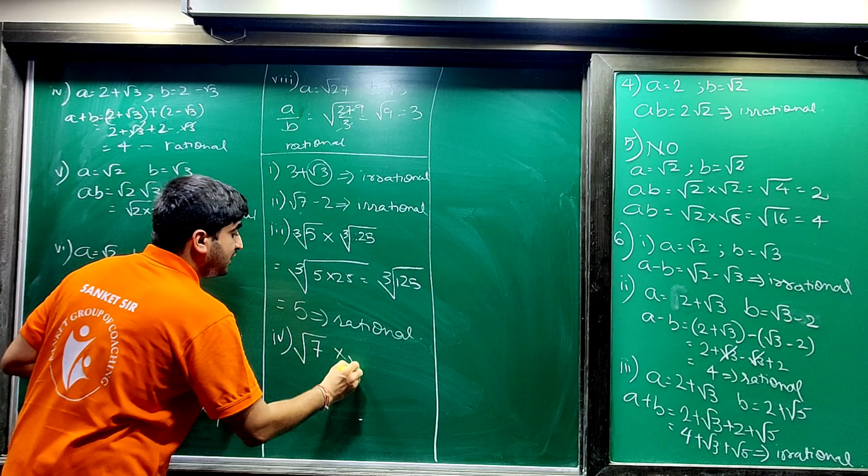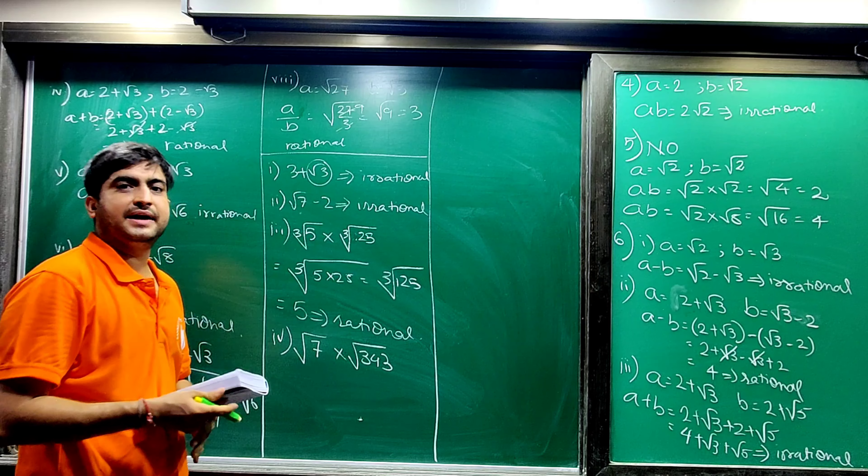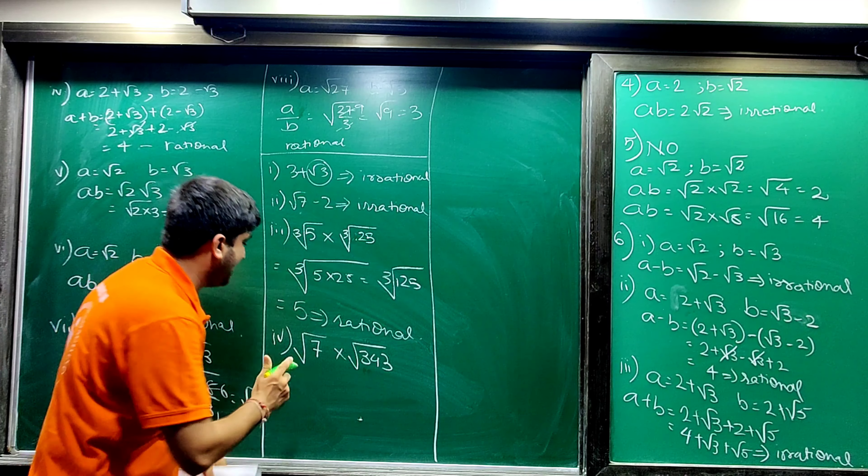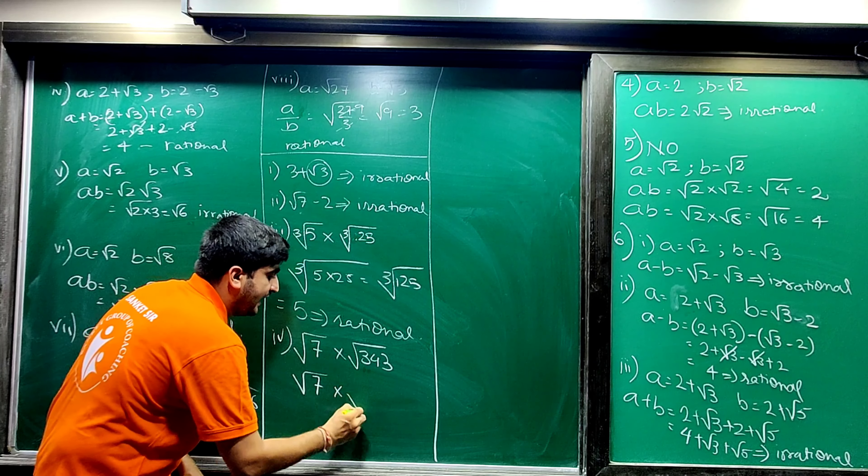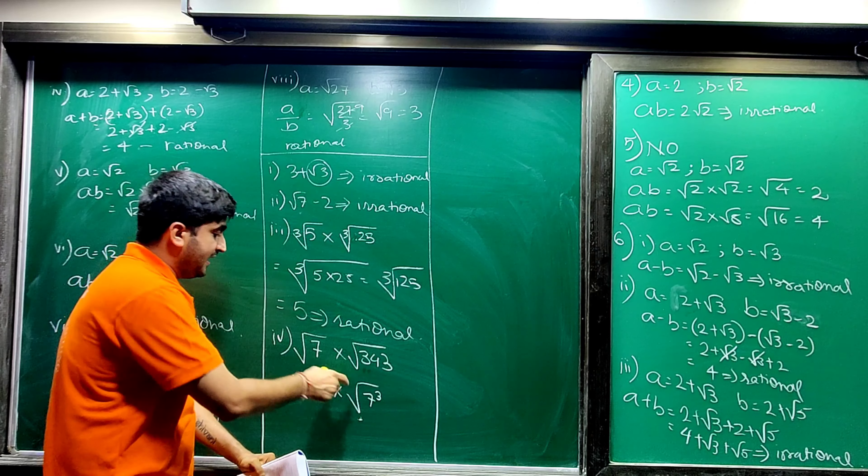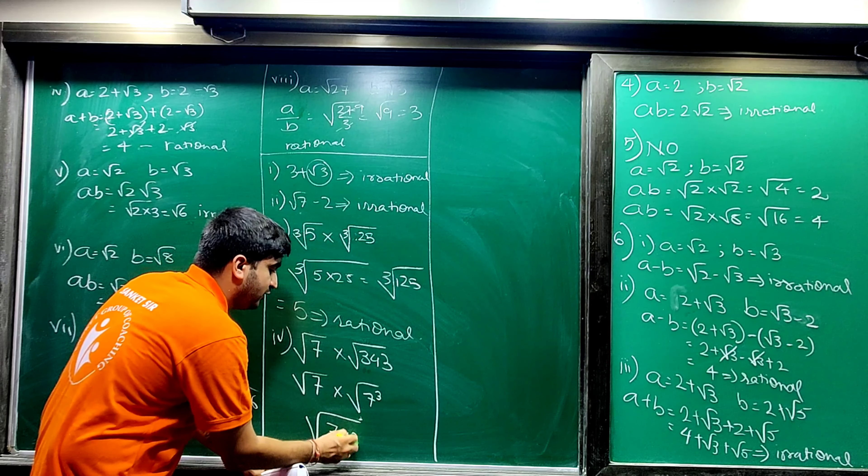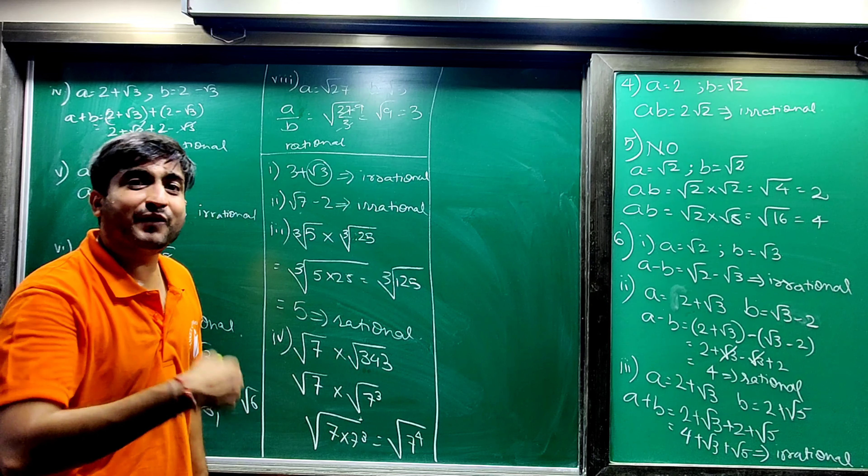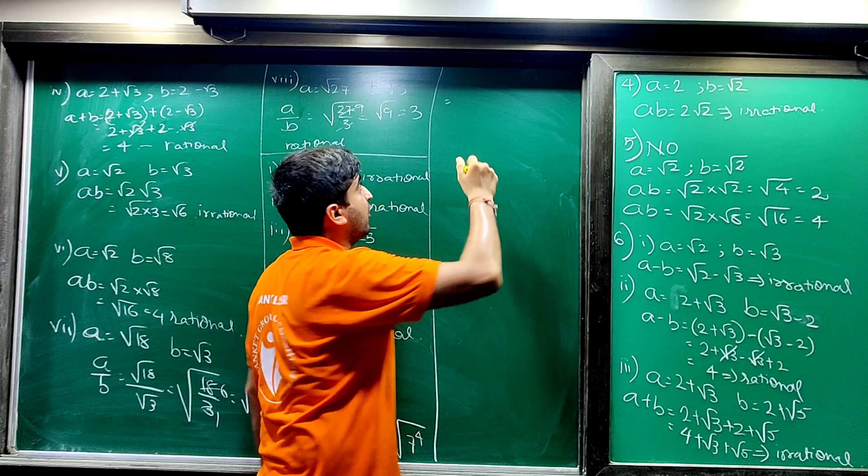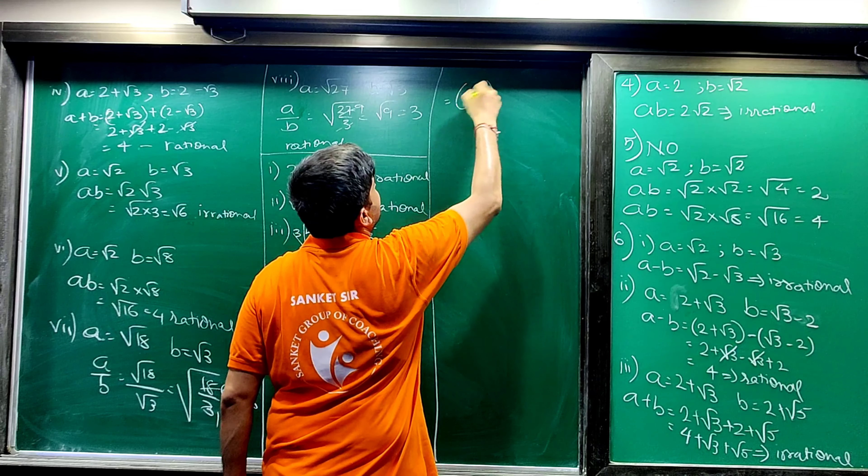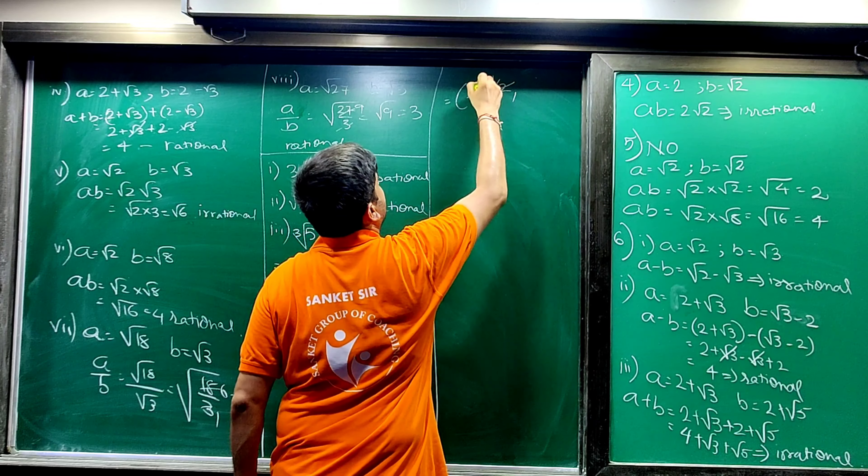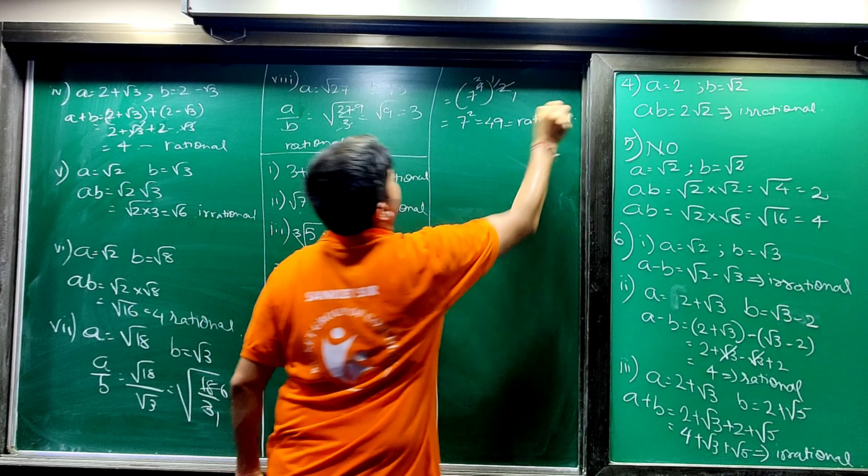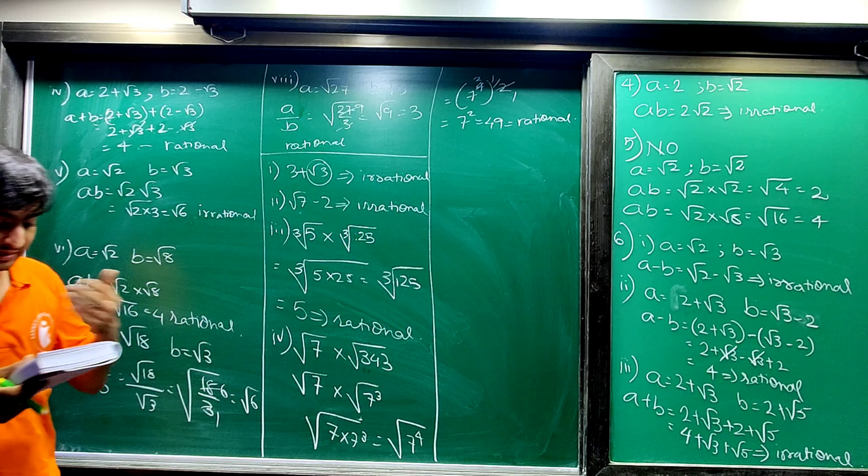Next, fourth: under root 7 into under root 343. Now carefully see, 343 is 7 cube. So I will write this: this is 7, but this is 7 cube. When I write them together, 7 into 7 cube, which will be 7 to the power 4. When it comes out of square root, use your formula, 7 raise to 4 divided by 2, this will be 7 square, 49, which is a rational. This way you can solve it.